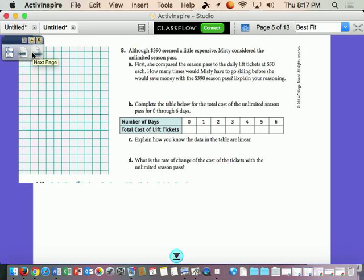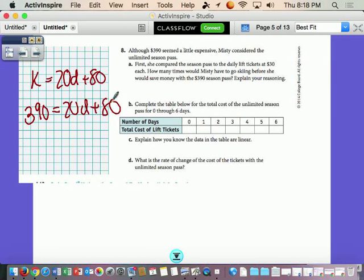Number eight. Although $390 seems a little expensive, Misty considered the unlimited season pass. First, she compared the season pass to the daily lift tickets at $30 each. How many times would Misty have to go skiing before she would save money with the $390 season pass? So there are many different ways you can do this. I'm going to use our equation. Since we spent all that work in making an equation, we might as well use it, right? So our equation is K equals 20D plus 80. We want to know how many times she has to go for it to cost $390 because that will balance it out. So $390 is our cost we want, equals 20D plus 80. That looks familiar, right? We're going to solve an equation. First, we're going to subtract 80 from both sides.